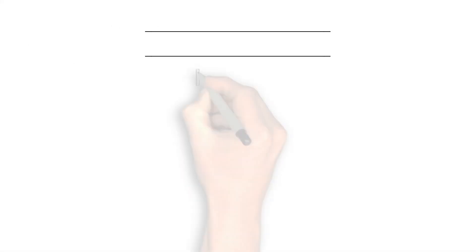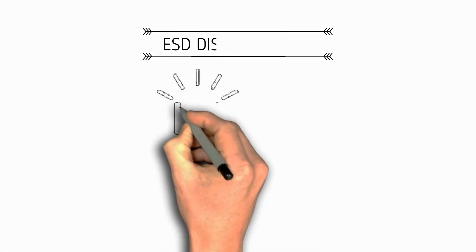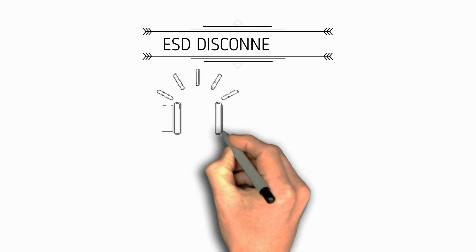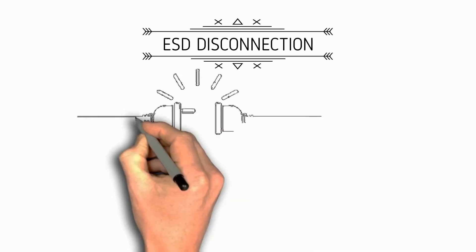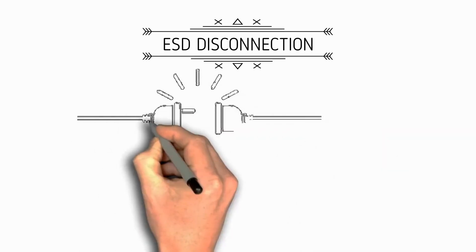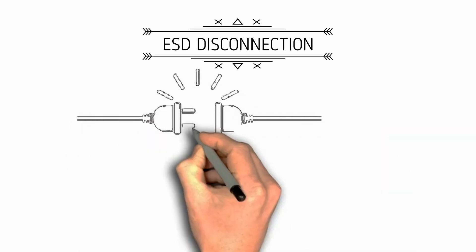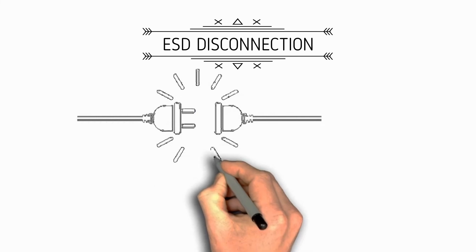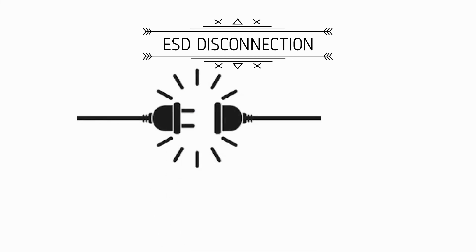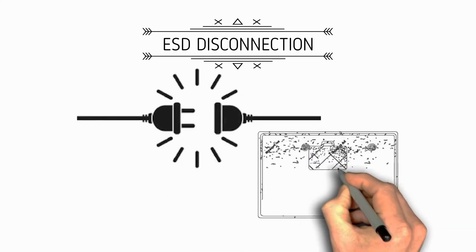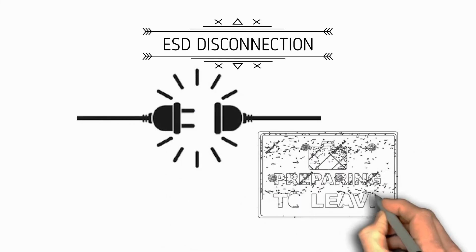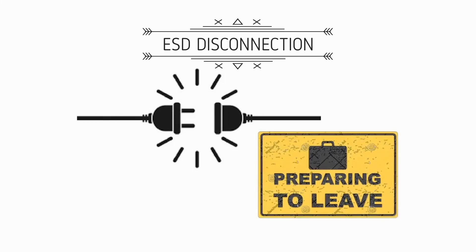Next is disconnection of the ESD cable. When all papers and operations are completed, the ESD cable or communication cables between the terminal and the vessel are disconnected, and the vessel prepares to sail out.